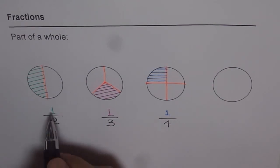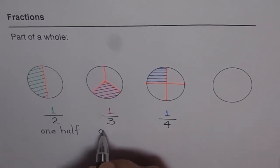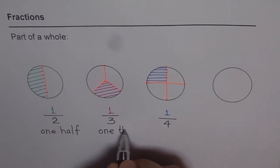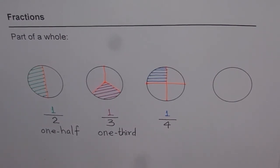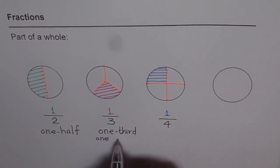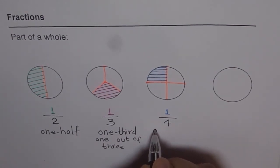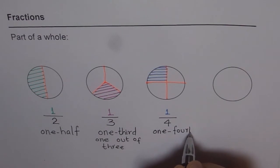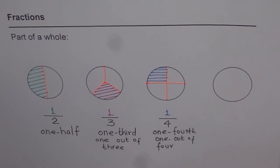Let's write down how we read them. This one is called one-half. This one is called one-third — so one-third is shaded. Sometimes we write a hyphen in between since the words go together: one-third, or one out of three. And this one can be called one-fourth, or one out of four. So that is how we represent fractions. When we write one on the top, we also name them as unit fractions.